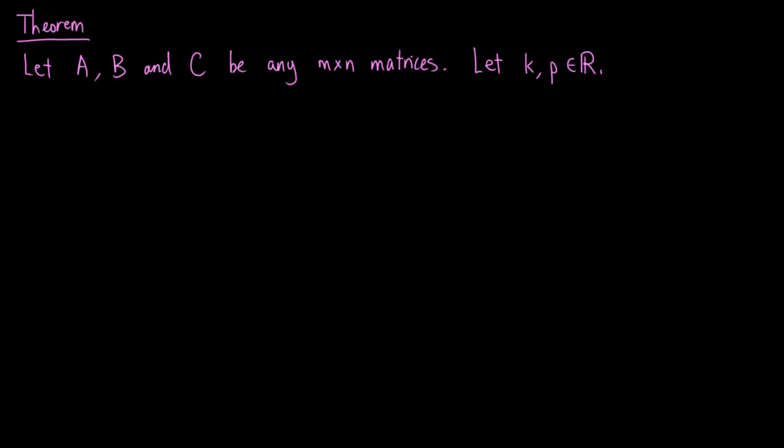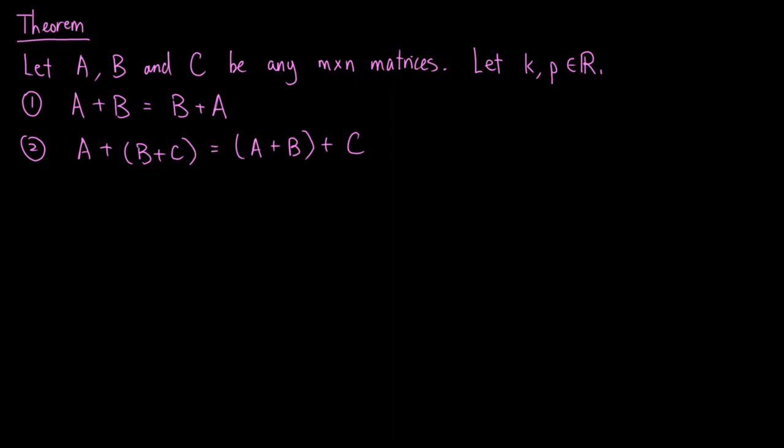We finish by proving some properties of matrix addition and scalar multiplication. Let A, B and C be any n by n matrices, and let K and P be real numbers. The first property is that A plus B equals B plus A. In other words, matrix addition is commutative — we can swap the order of the matrices. The second property is that A plus (B plus C) equals (A plus B) plus C. In other words, matrix addition is associative; we can choose to add any two matrices first before adding the others.